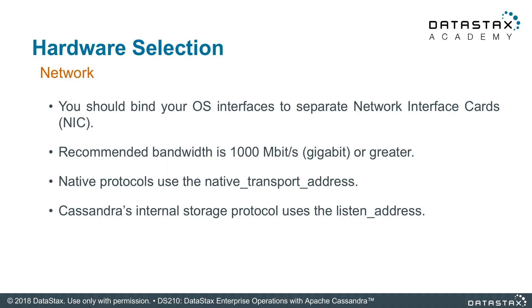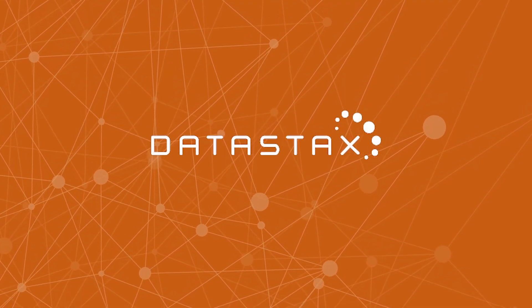When it comes to network bandwidth, use Gigabit or better. You'll want to bind your OS interfaces to separate NICs to avoid NIC contention. Also remember that your nodes use the native transport address for native protocols and the listen address for the internal storage protocol. Both of these are set in the Cassandra YAML file.